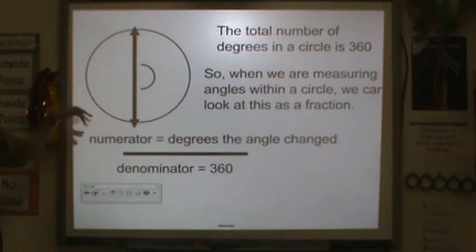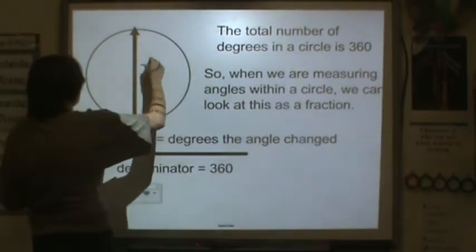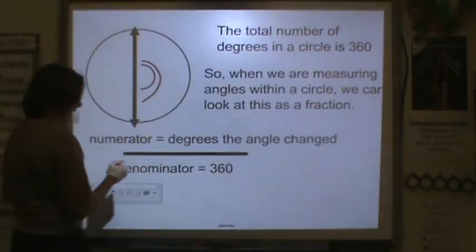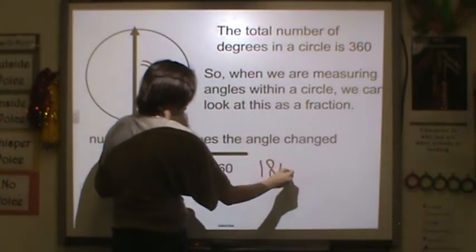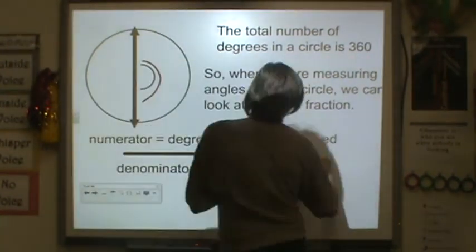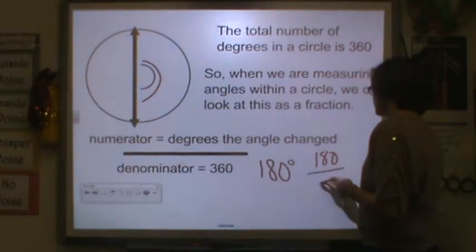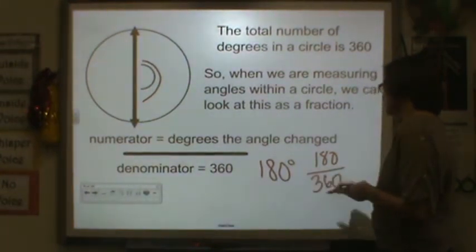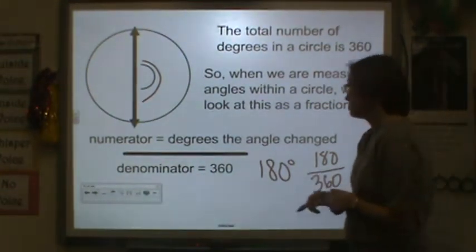So let's look at this one. We know here that we have a straight angle. So that angle is 180 degrees. If we were to write it as a fraction, it would be 180 of those degrees out of 360 degrees.